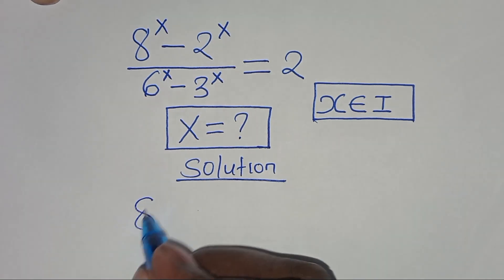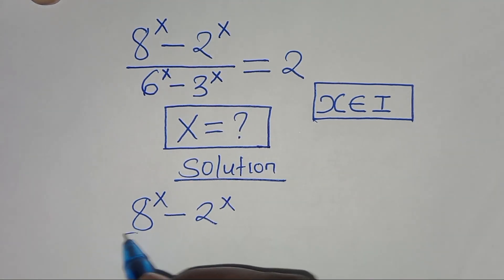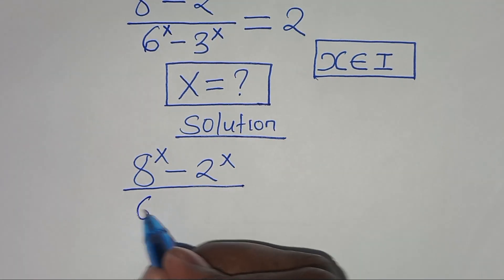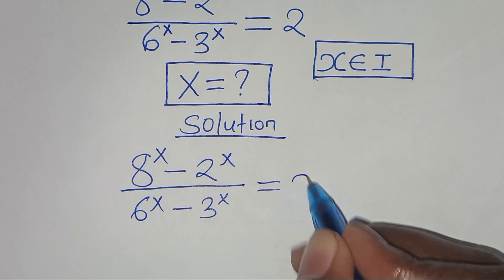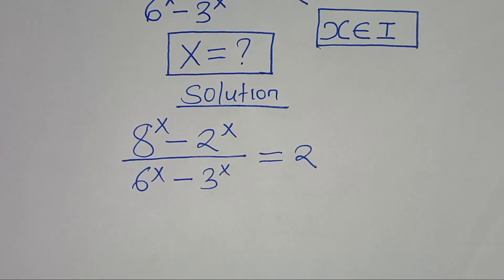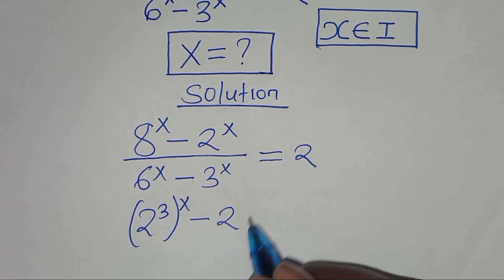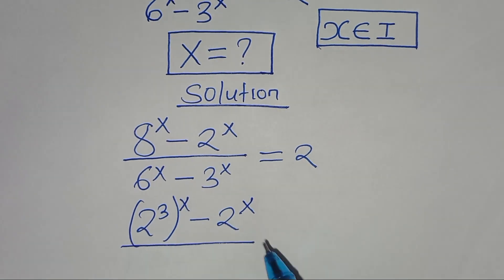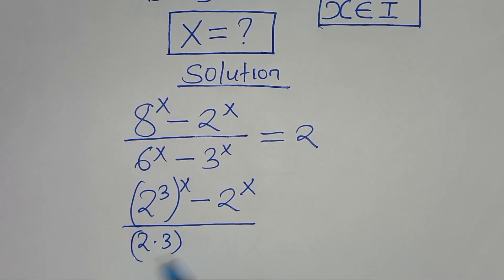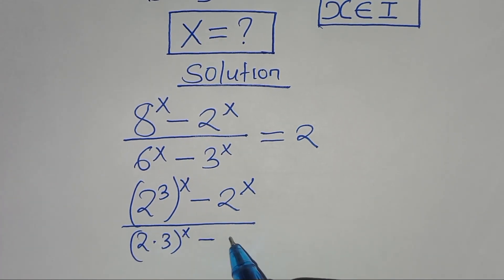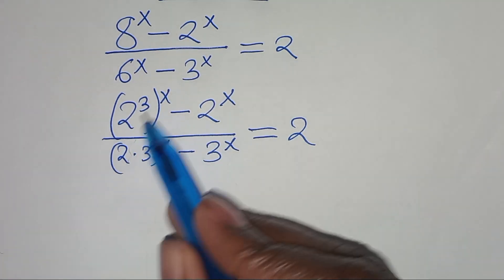We have (8^x minus 2^x) over (6^x minus 3^x) equals 2. We can express 8^x as (2^3)^x, and subtract 2^x. In the denominator, 6^x can be expressed as (2 times 3)^x, then subtract 3^x.